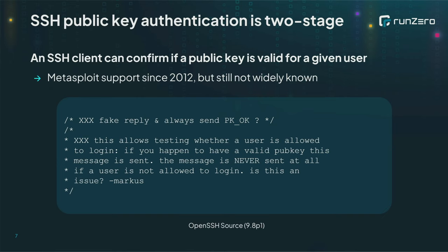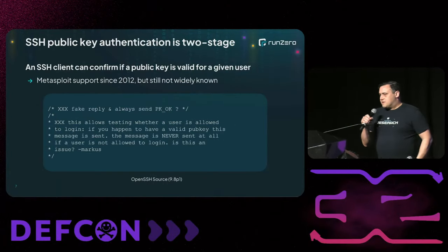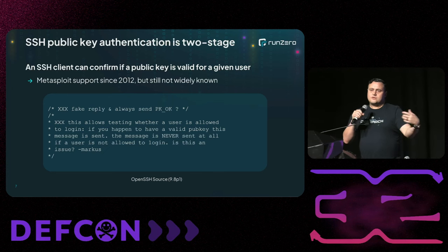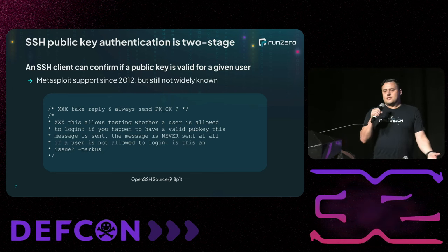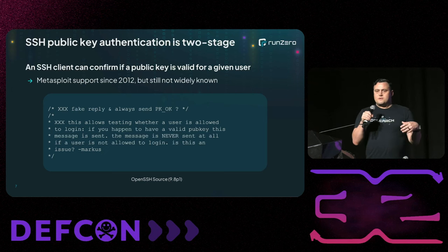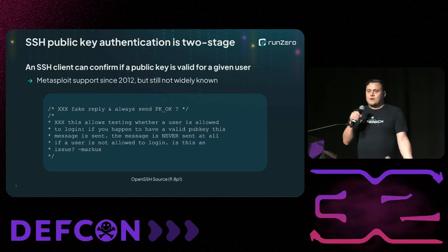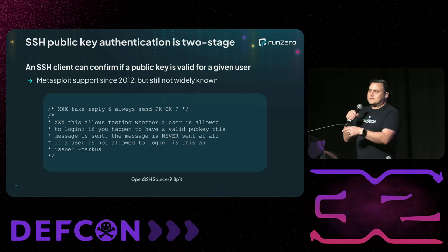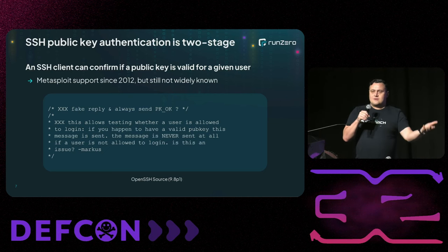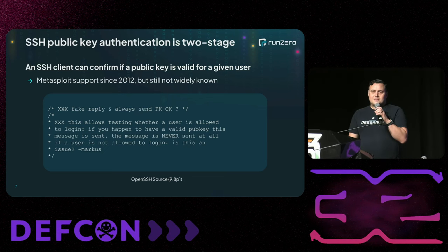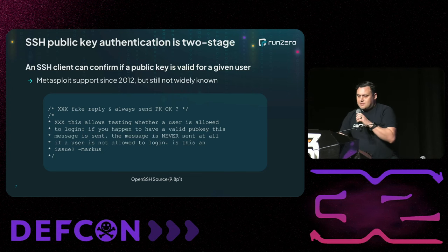Before we go there we need to talk about how SSH public key authentication works. SSH public key authentication is two-stage: first you say 'hey server, would you accept this public key for this username?' and it says yes, then you have to sign a big blob of data that proves you have the private key. But you can do that first part without the private key at all — there's been a module in Metasploit for it since 2012. It lets you take someone else's public key and check a bunch of servers to see whether that key has access for that username. There's even a comment in OpenSSH saying 'is this a problem? I don't know, but it's been there forever.'